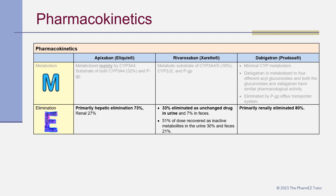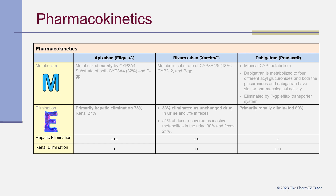Regarding elimination: apixaban is primarily hepatically eliminated at 73%, with a renal component of 27%. For rivaroxaban, 33% is eliminated as unchanged drug in the urine and 7% in the feces; 51% of the dose is recovered as inactive metabolites in the urine (30%) and feces (21%). Dabigatran is primarily renally eliminated, about 80%. In summary, apixaban is predominantly hepatically eliminated, dabigatran is primarily renally eliminated, and rivaroxaban falls somewhere in between.